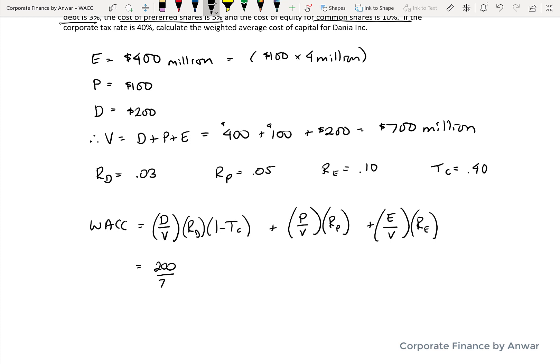So if we substitute the numbers that we've got, we have $200 million in debt, and the value of the company is $700 million. So $200 divided by $700 times the 3% interest rate times 1 minus the 40% tax rate,